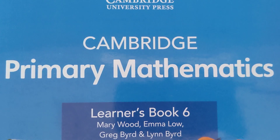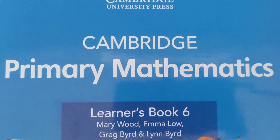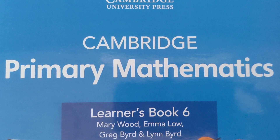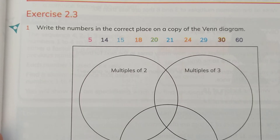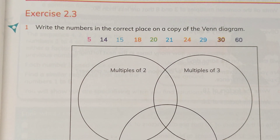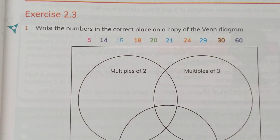Bismillahirrahmanirrahim, assalamu alaikum dear students. I hope you are fine. This is Cambridge Primary Mathematics Learners Book 6. We have started chapter number 2. We are done with exercise 2.1 and 2.2. Now we are going to do exercise 2.3, in which we are going to learn about common multiples and factors.